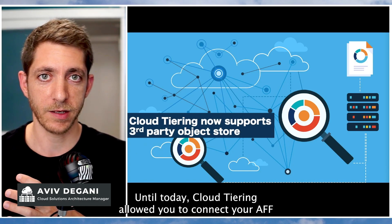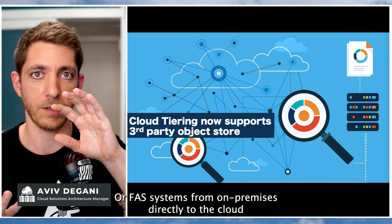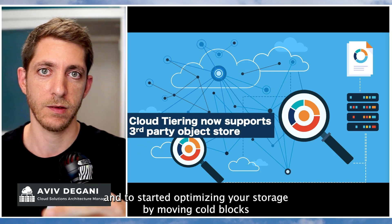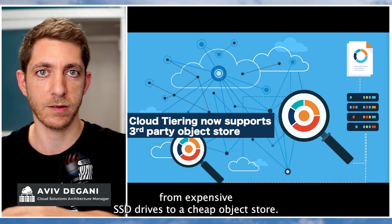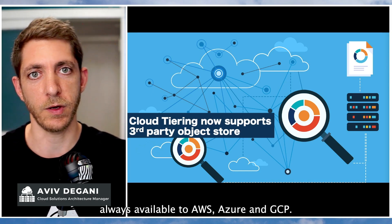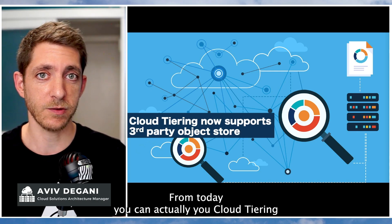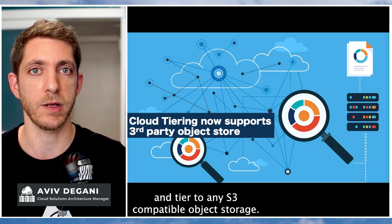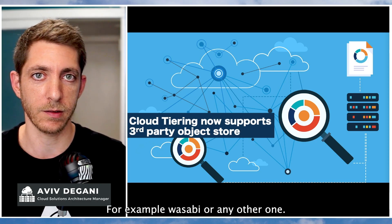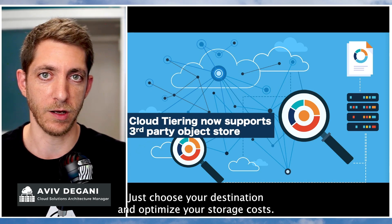Cloud Tiering allows you to connect your AFF or FAS system from on-premises directly to the cloud and optimize your storage by moving cold blocks from expensive SSD drives to cheap object storage. That was always available for AWS, Azure, and GCP, but now you can also use Cloud Tiering to tier to any S3-compatible object storage — for example, Wasabi or any other. Just choose your destination and optimize your storage costs today.